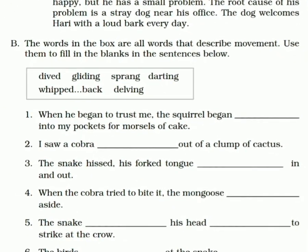Now the B part is: 'The words in the box are all words that describe movement. Use them to fill in the blanks in the sentences below.' Yeh movements jo ki in aapki chapter mein bhi use huye hai. First hai: 'When he began to trust me, the squirrel began [delving] into my pocket for muzzle of cake.' Yeh ke tukde khaane ke liye squirrel kya karti thi jab pehchan ho gayi thi writer ke saath — the squirrel began delving. Second hai: 'I saw a cobra gliding out of a clump of cactus.' Third hai: 'The snake hissed. His forked tongue [darting] in and out' — darting in and out, phata-phata andar bahar karna.